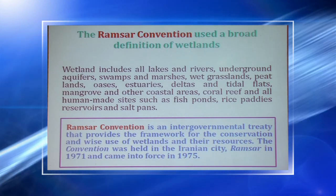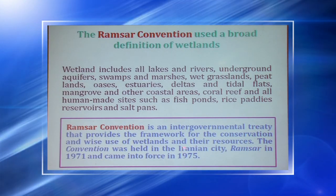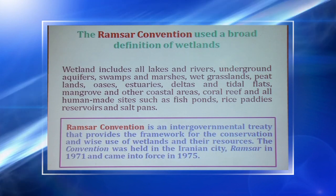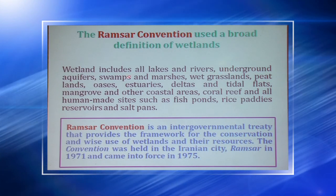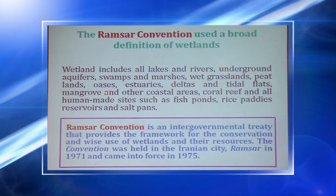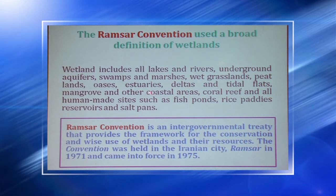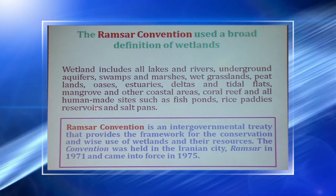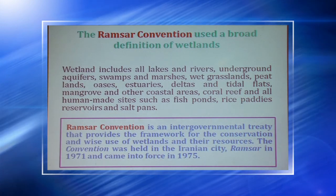The Ramsar Convention used a broader definition of wetlands. The Ramsar Convention was held in 1971 in the Iranian city of Ramsar. As per its definition, wetlands include all lakes and rivers, underground aquifers, swamps and marshes, wet grasslands, peatlands, oases, estuaries, deltas and tidal flats, mangroves and other coastal areas, coral reefs, and all human-made sites such as fish ponds, rice paddies, reservoirs, and salt pans.